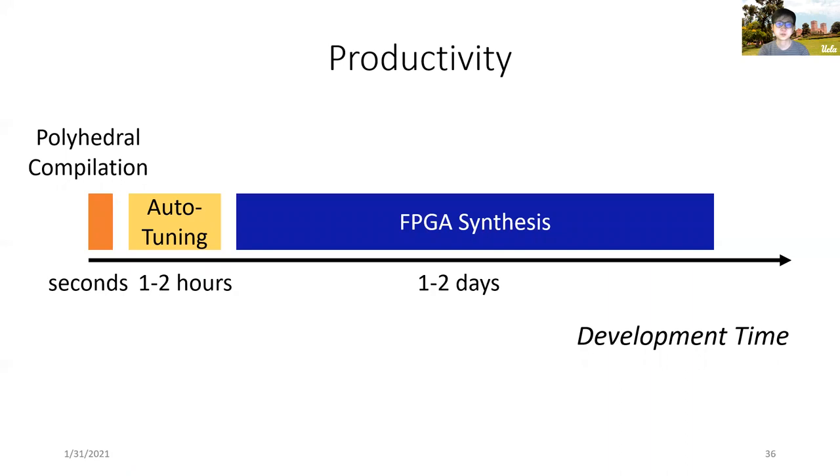The last part is productivity. Here are some rough numbers of the compilation process based on our experiments. The polyhedral compilation takes a few seconds, while the autotuning phase takes hours to finish. Considering the time it takes for FPGA synthesis tools to synthesize designs, in our case, which is around one to two days, we are able to deliver a high-performance systolic design within days, which helps boost the productivity of the design process.